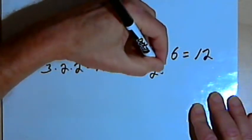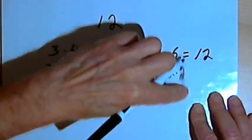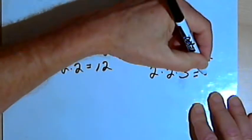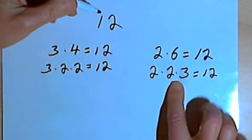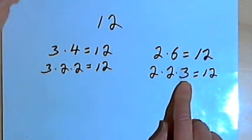So now I can say that 2 times 2 times 3 equals 12. And that would be a prime factorization of 12, because the numbers I've used are all prime factors.